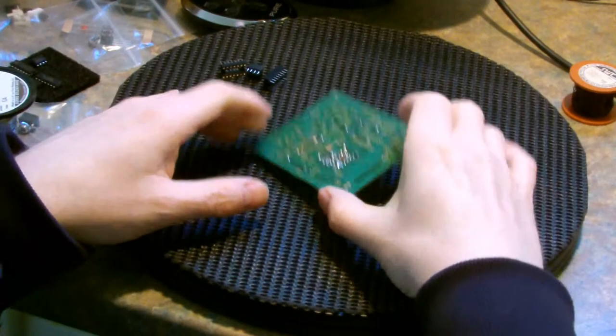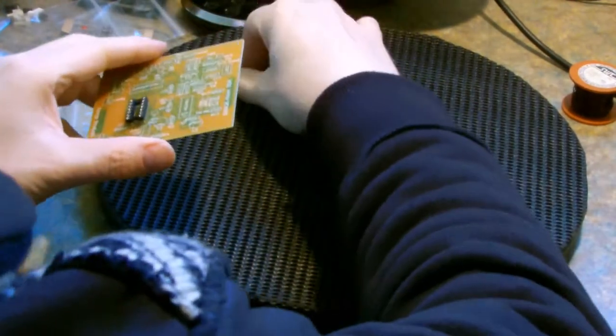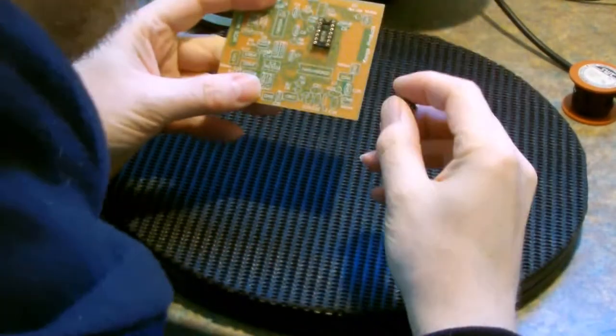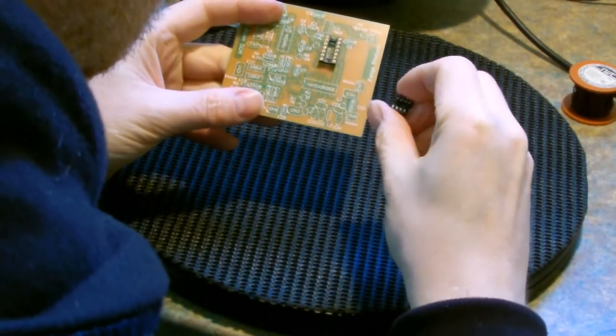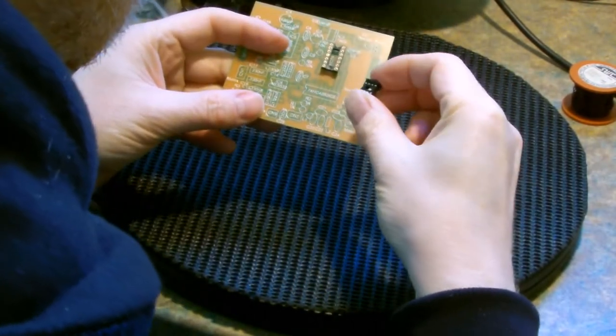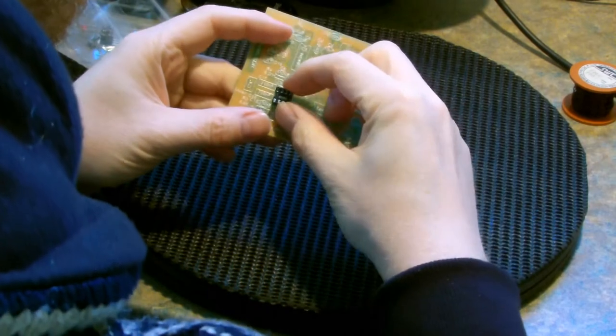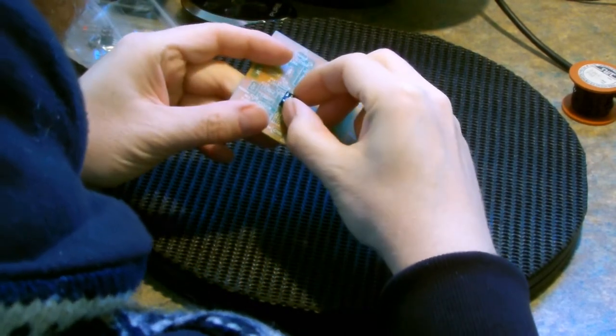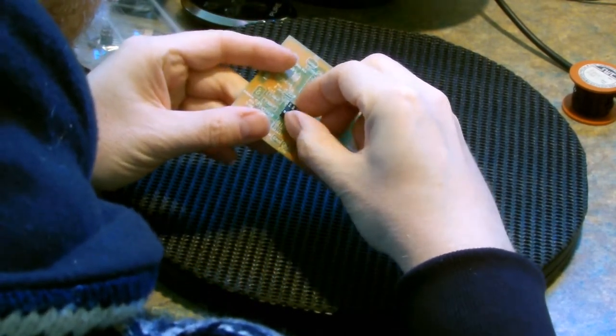The instructions for the kit say to start by installing the 12 wire links. These should go on the upper side of the PCB, but I've decided to use enamelled copper wire on the underside of the board. By removing the enamel from the tips of accurately cut lengths of wire, I've been able to solder the links in place quite easily.